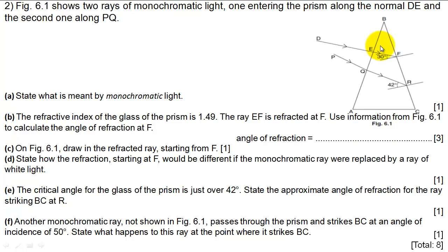For the first question, pause the video and read the question and attempt it if you can. So we've got this prism, there's two rays going into it, ray DE, ray PQ. Part A says state what is meant by monochromatic light. Monochromatic light just means of one colour, or one wavelength, or one frequency. All three would have been accepted.